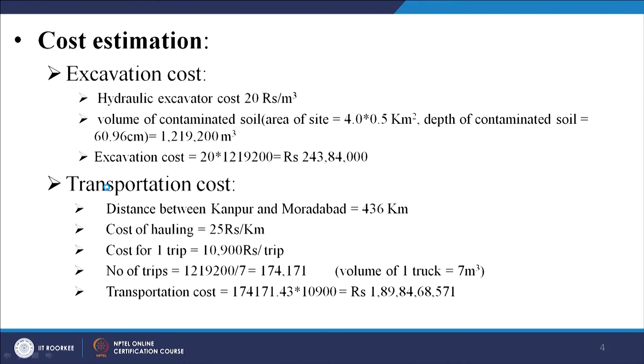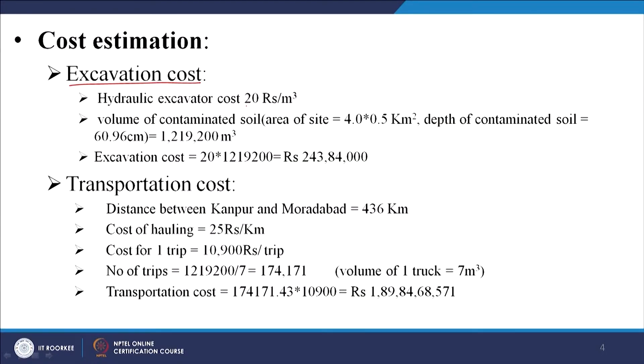Let us look at the cost estimation. For excavation, the hydraulic excavator cost is around 20 rupees per cubic metre. The volume of contaminated soil is based on the area - the length, width, and a depth of 2 feet - giving a particular number of cubic metres of soil. The excavation cost at this rate comes to 2,43,84,000 rupees just for excavating the soil. This may be a conservative estimate as perhaps not the entire 0.5 kilometre width or full 2 feet depth is contaminated, but even if you decrease this cost by two or three times, it is still considerable.